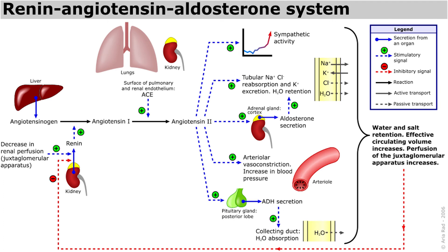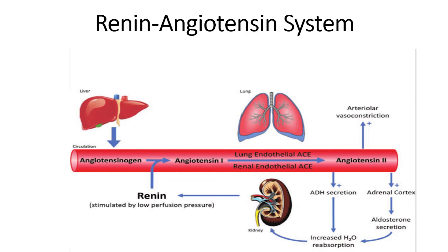Aldosterone causes the renal tubules to increase the absorption of sodium, which consequently causes the reabsorption of water into the blood, while at the same time causing the excretion of potassium to maintain electrolyte balance. This increases the volume of extracellular fluid in the body, which also increases blood pressure.